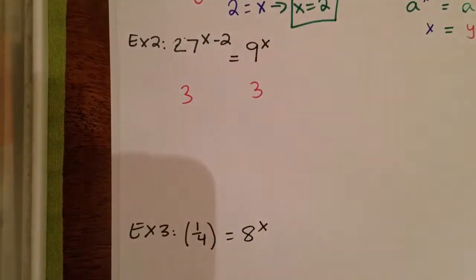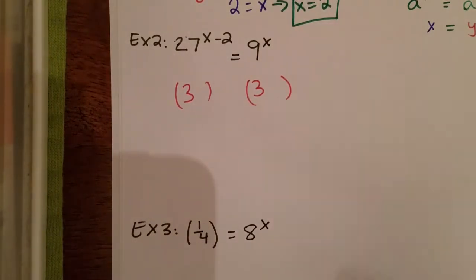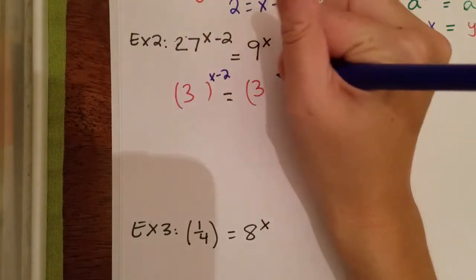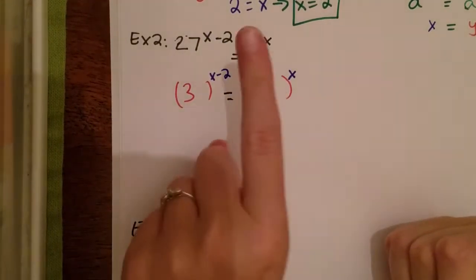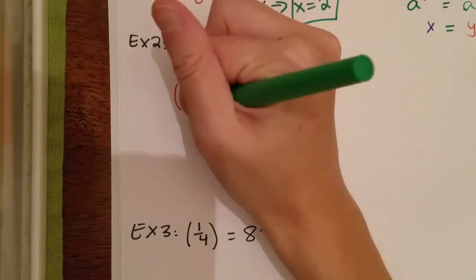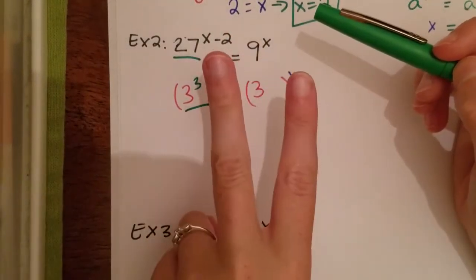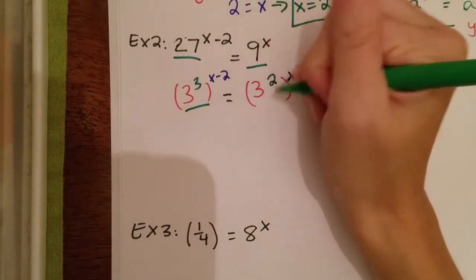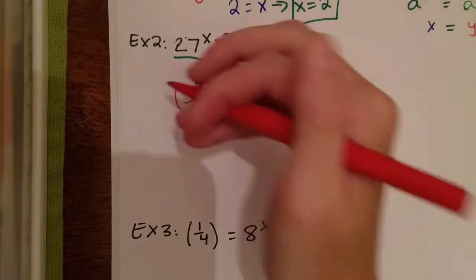So 3 works. I'm going to make each of my bases a 3, and I need to think of an exponent to raise 3 to in order to get what I originally started with. I'll keep my current exponents — x minus 2 and x — they're still there. Now, 3 times 3 is 9, times 3 is 27, so 3 to the third power gives me 27. I rewrote 27 as 3 to the third. And 3 times 3 is 9, so my exponent is 2 — I rewrote 9 as 3 squared.